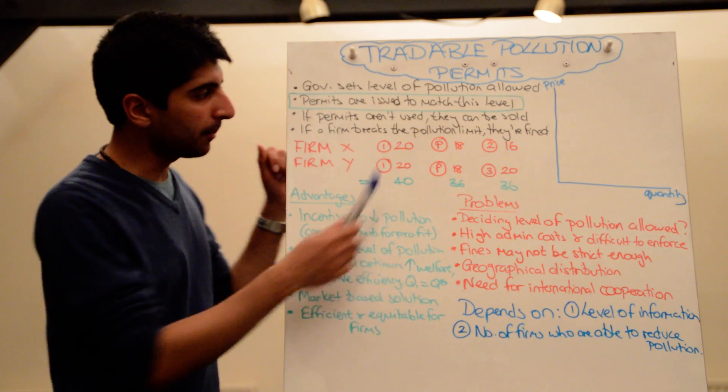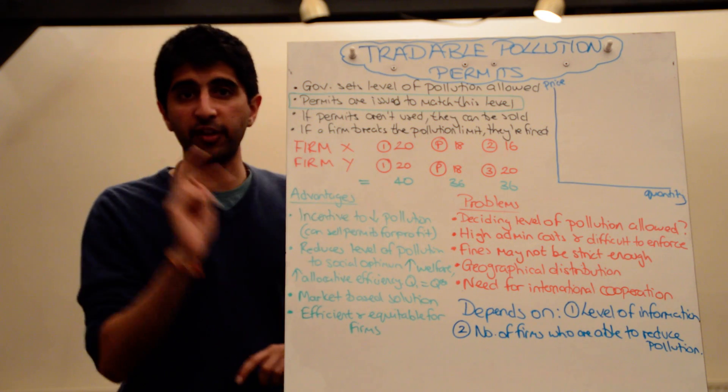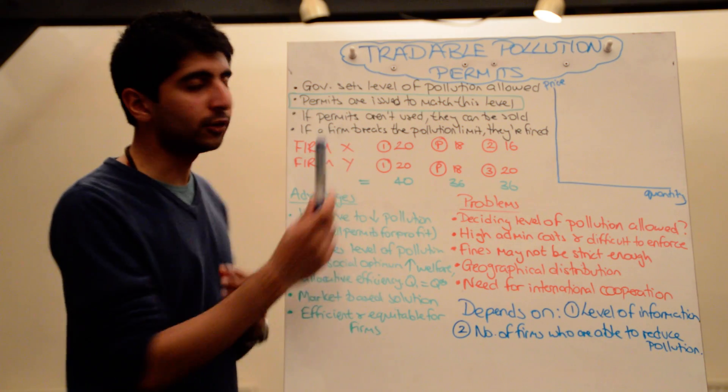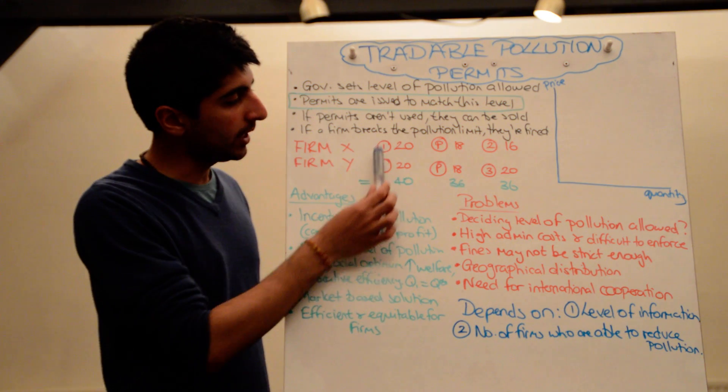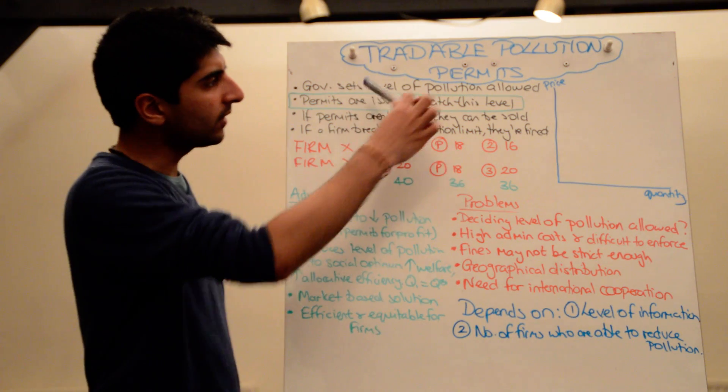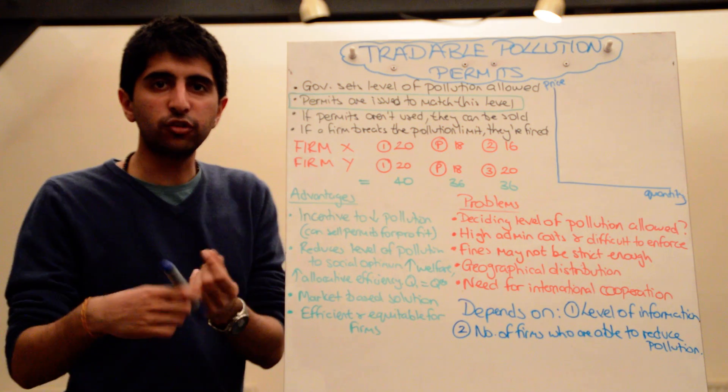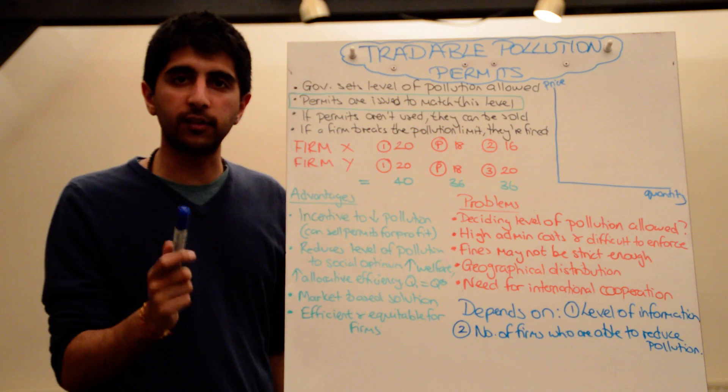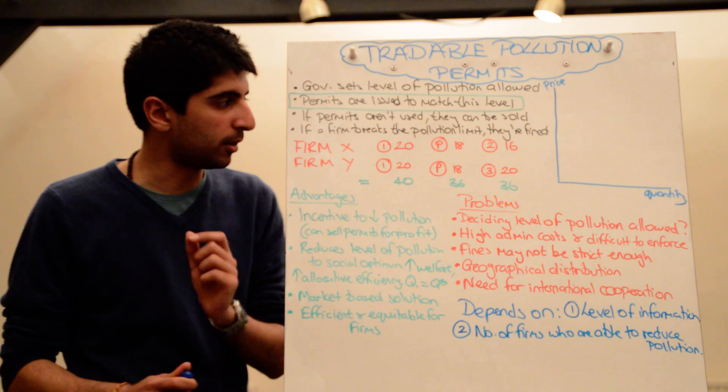Let's take an example of pollution permits. Let's look at two firms, firm X and firm Y. Let's say initially that both firm X and firm Y were producing 20 units of pollution. So the numbers here are for units of pollution. So initially, at time 0.1, they were both producing 20 units of pollution. Let's say now, as a result of governments imposing pollution permits and distributing permits to these firms, each firm is now only allowed to emit 18 units of pollution. So the permits that they're given reflect 18 units of pollution that they're allowed to pollute.